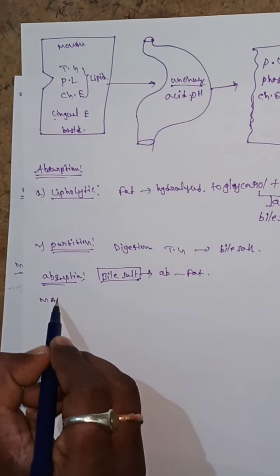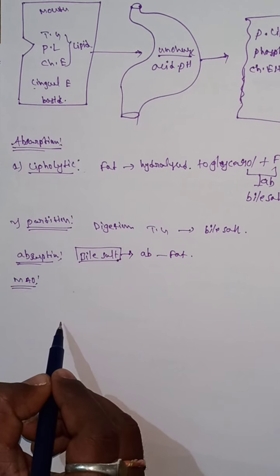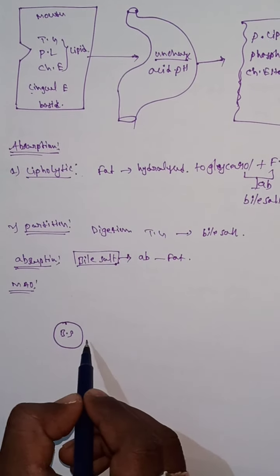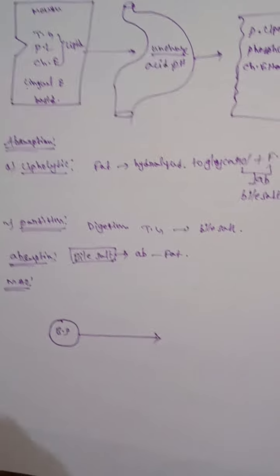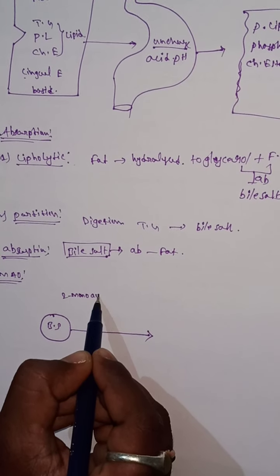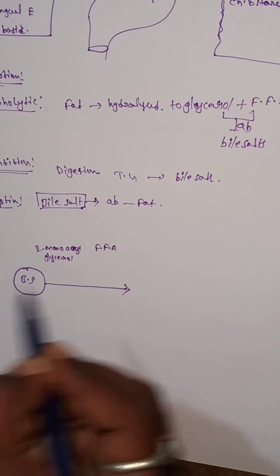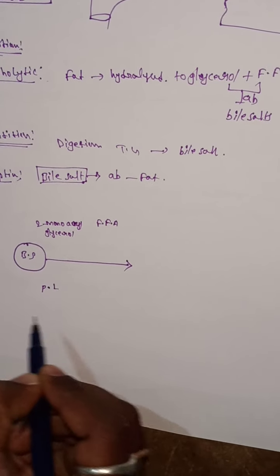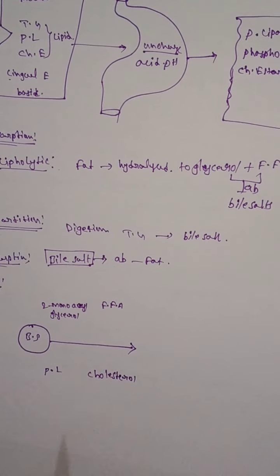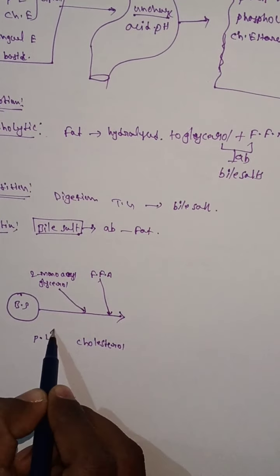Now, the mechanism of action of absorption of lipids: each and every fat substance must compulsorily bind with bile salts. The bile salts combine with the fat substances — which are monoacylglycerol, free fatty acids, phospholipids, and cholesterol. These four fat substances compulsorily bind to bile salts.